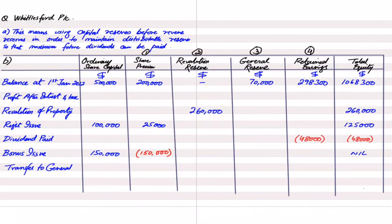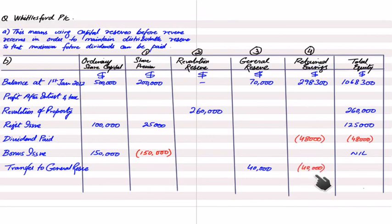For transfer to general reserve in note six: on 31st December, 40,000 was transferred to general reserve. When transferring to general reserve, the general reserve account increases and retained earnings is debited. In this transaction also, no new wealth is created — it is simply a transfer from one pocket to another.